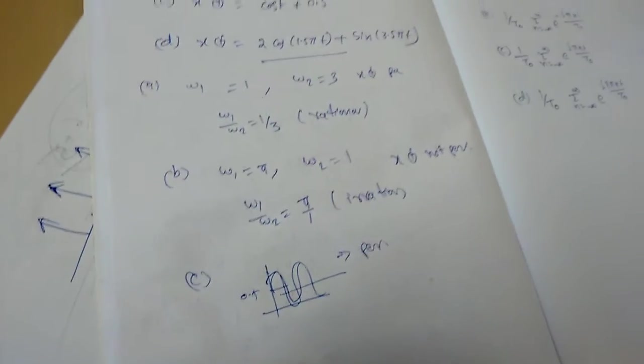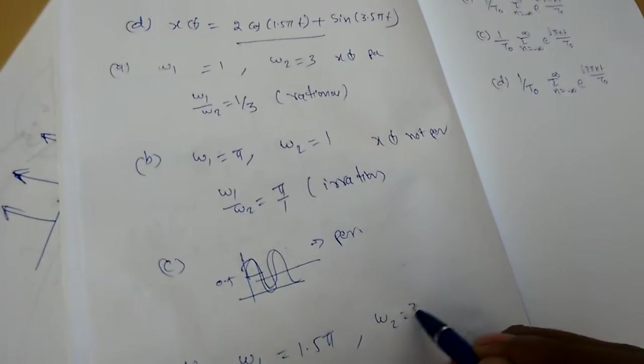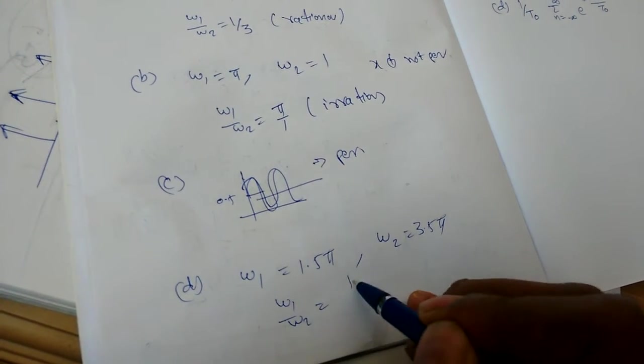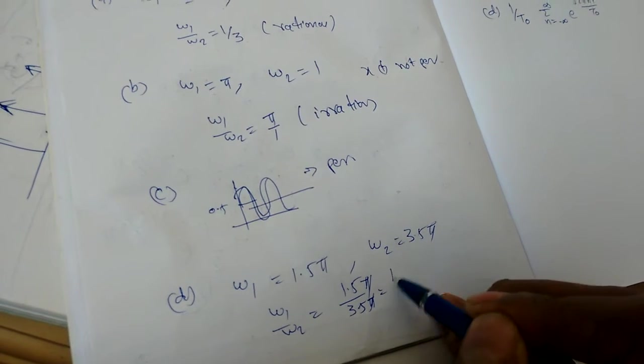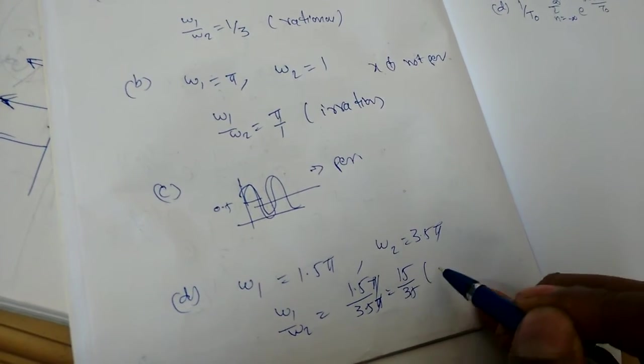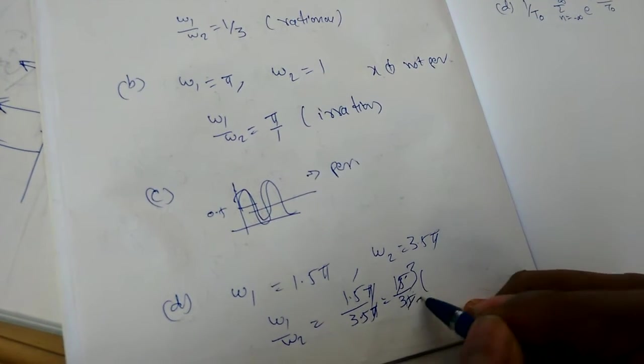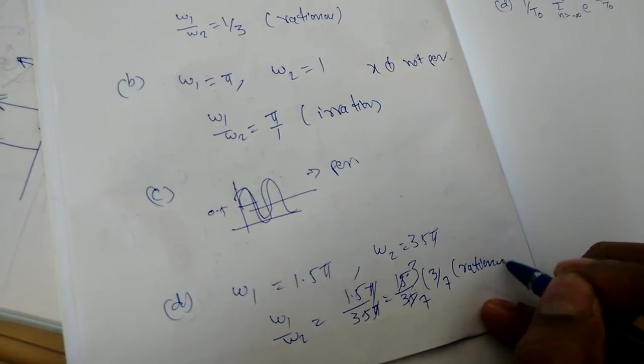And the fourth one, for d, omega 1 is 1.5 pi, omega 2 is 3.5 pi. So omega 1 by omega 2 will get 1.5 by 3.5. So 15 by 35 is a rational number. So 5, 3 is 5, 7. So 3 by 7 is a rational number, we can check.